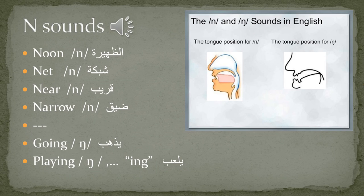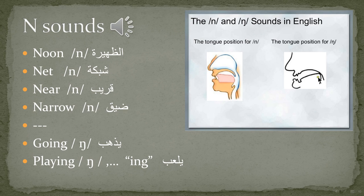N has two sounds — either it's N or N. What's the difference? N: the tongue position is like this, it's close to your teeth. N: your tongue is laid down and does not move up.